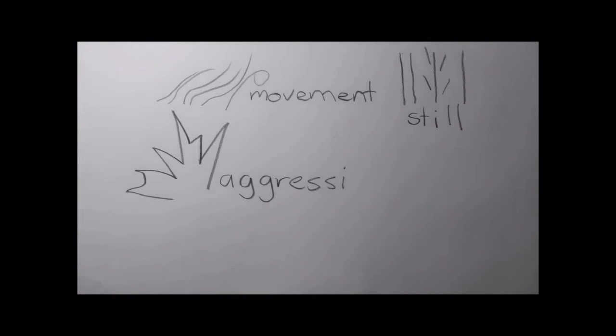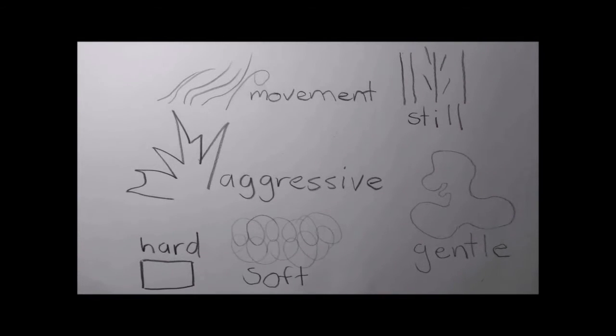Lines can describe movement. Be still. Aggressive. Gentle. Hard or soft.